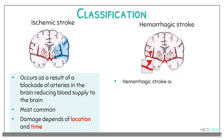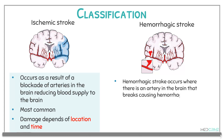On the other hand, a hemorrhagic stroke occurs when there is an artery in the brain that breaks, causing hemorrhage or bleeding into the brain tissue and eventually damaging the brain tissue.